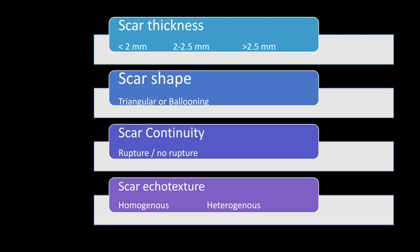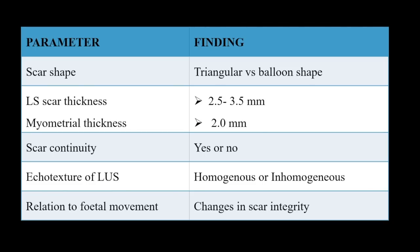The lower segment scar thickness should be more than 2.5 mm and myometrial thickness more than 2 mm. Grading of lower segment scar thinning: mild thinning is 2.5 to 3.5 mm, moderate thinning is 2 to 2.5 mm, and significant thinning is less than 2 mm. Scar shape should ideally be triangular due to fibrosis, with no ballooning. Scar continuity must be confirmed, and echo texture should be assessed since heterogeneity suggests an unhealthy scar.